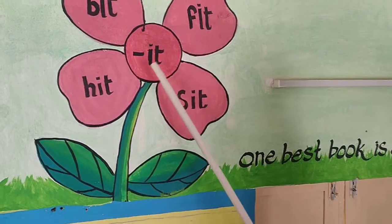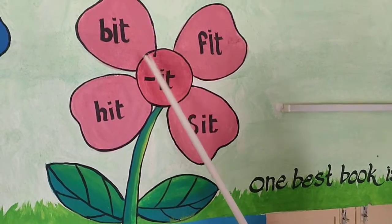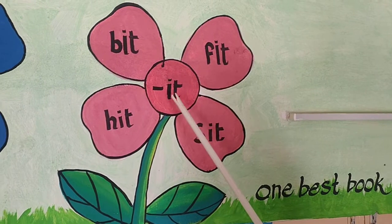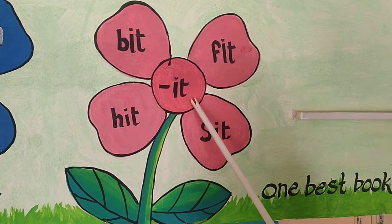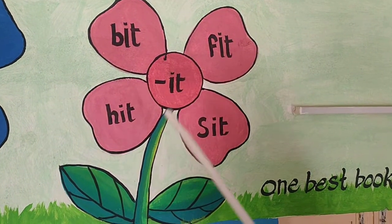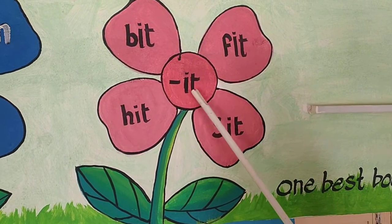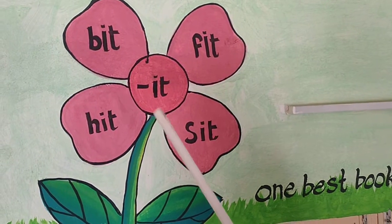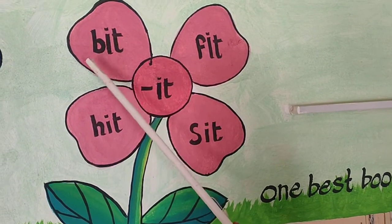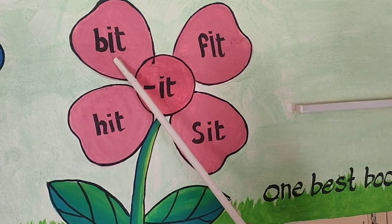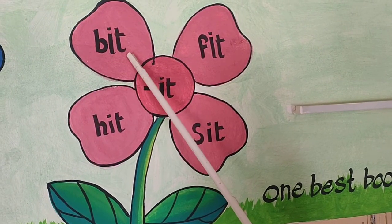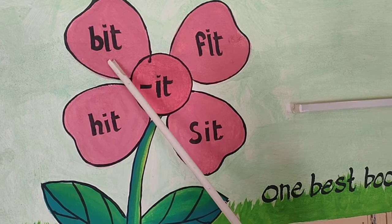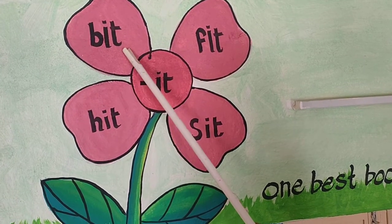Now we learn some words ending with I-T. I-T to end I at one T. Konni words ne ch kundu. B-I-T, bit. B-I-T, bit.